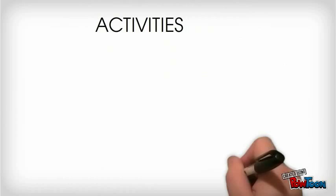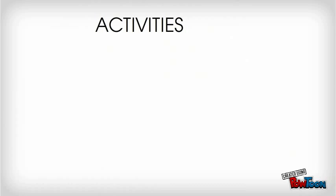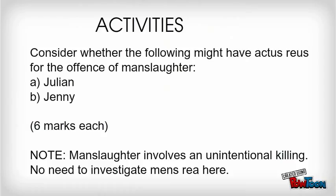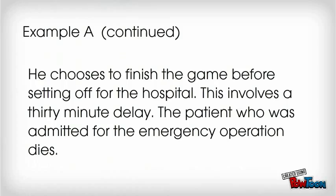You might like to try these activities. Study the two examples coming up and consider whether A. Julian and B. Jenny might have actus reus for the offence of manslaughter. Example A: Julian is a hospital surgeon on call, meaning he may be rung at home and called into work when necessary. Late one night, Julian is telephoned by his hospital while playing chess. The hospital want him to come and perform an emergency operation. He finishes the game before setting off, involving a 30 minute delay. The patient who is admitted for the emergency operation dies.